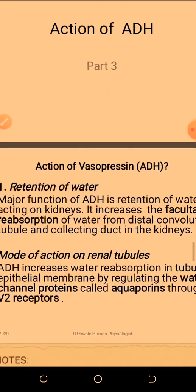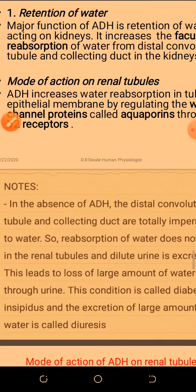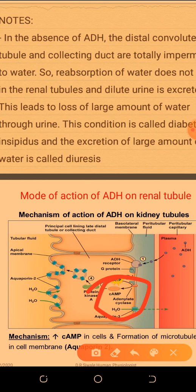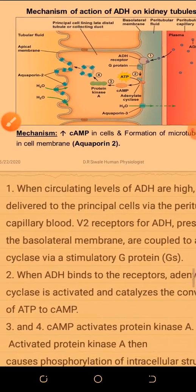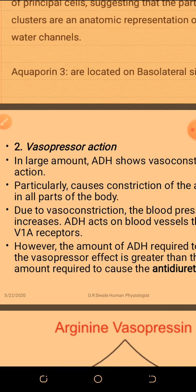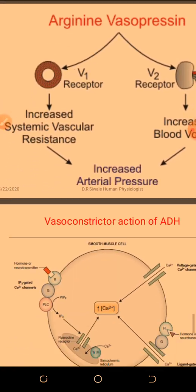The actions of ADH include retention of water. The mode of action of ADH is via the adenyl cyclase mechanism. The vasopressor action causes smooth muscle constriction through activation of myosin light chain kinase with calcium-calmodulin complex — the same mechanism of smooth muscle constriction we discussed previously.